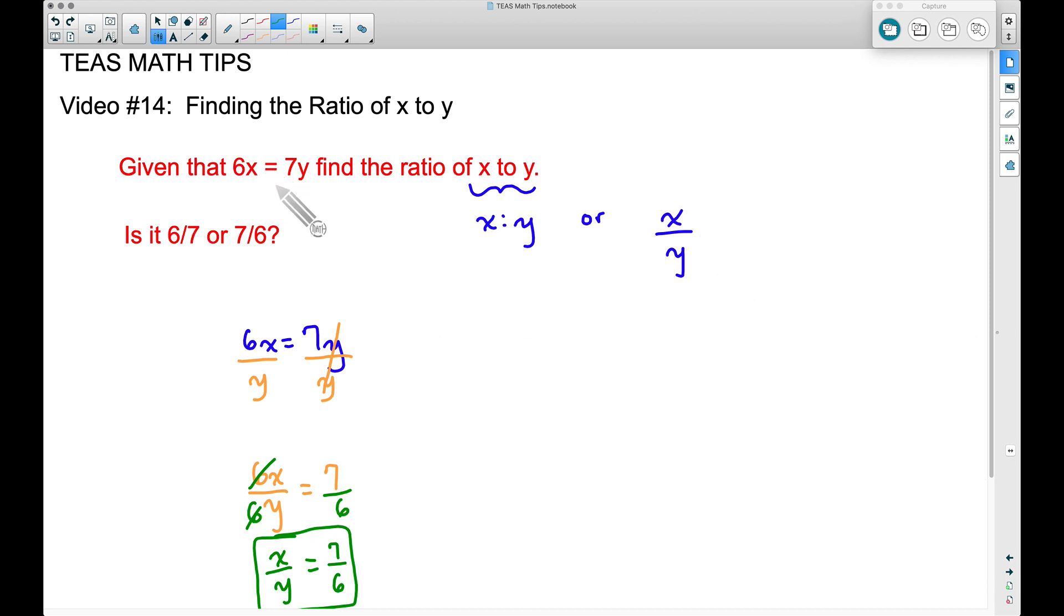Now you may be looking for shortcuts and thinking, let's take the 7 and divide by 6 every time. Sure, you can think about it like that, but sometimes you may have even more pieces to the ratio.